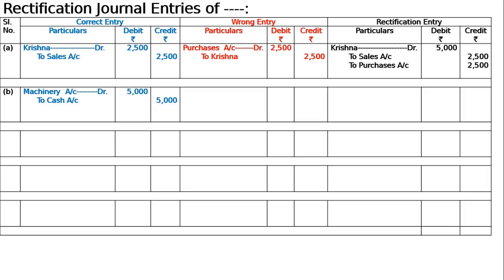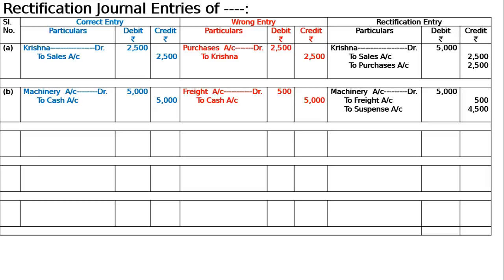Installation, freight, cartage, octroi — whatever you pay on an asset is to be debited to that respective asset account. Hence machinery account debited to cash. But it was by mistake debited to freight account, and at the wrong amount. The wrong entry was freight account debit 500, to cash account 5000. Since cash is correctly credited in both entries, we debit machinery account 5000 and credit freight account 500 to nullify the wrong debit.